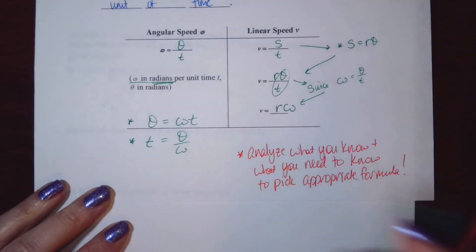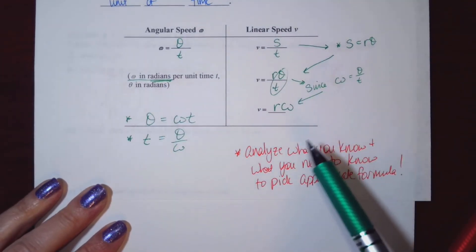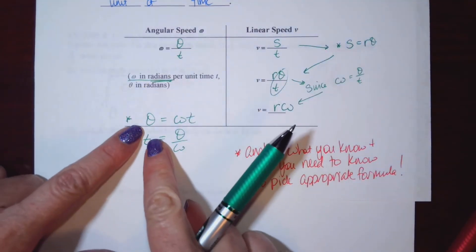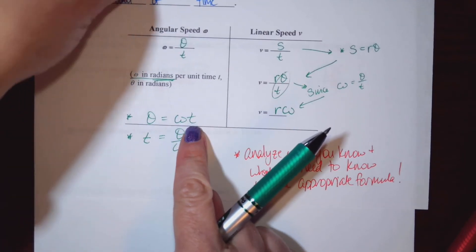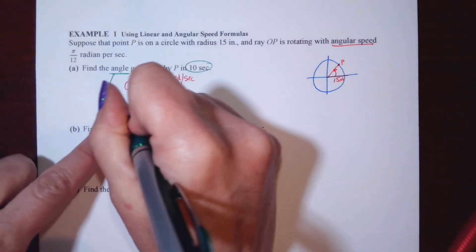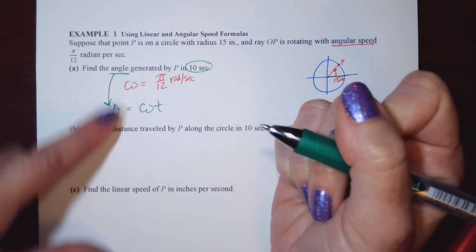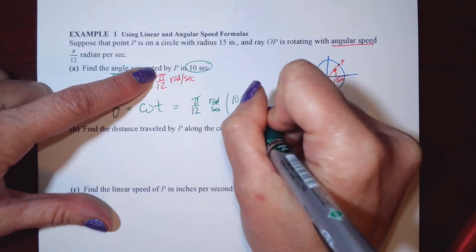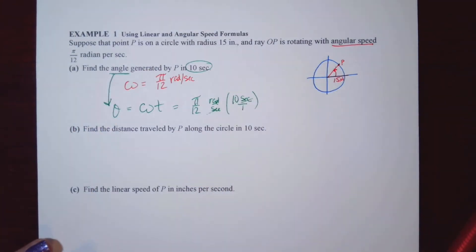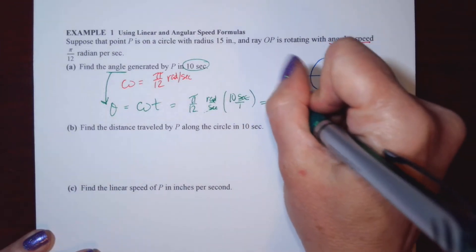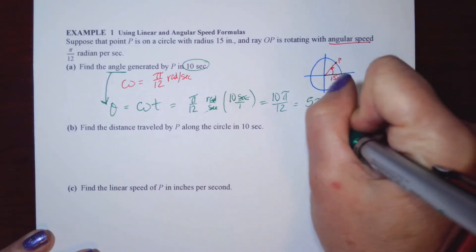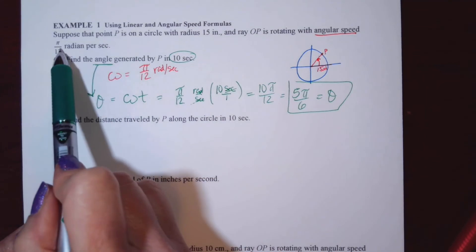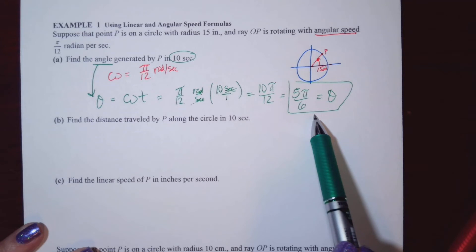We know omega and we need theta. We also have T — 10 seconds. So we use theta equals omega times T: theta equals (π/12 radians per second) times 10 seconds. The seconds cancel and we're left with radians: 10π/12 simplifies to 5π/6. So in 10 seconds, the angle generated is 5π/6 radians — that's almost π, rotating into the second quadrant.